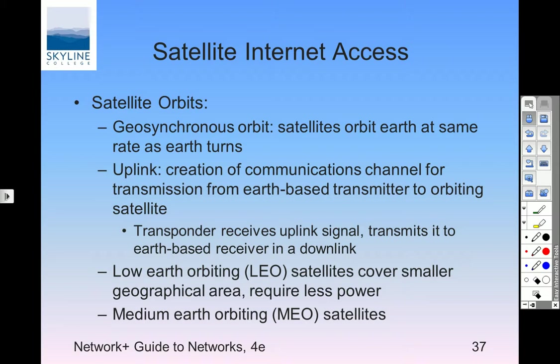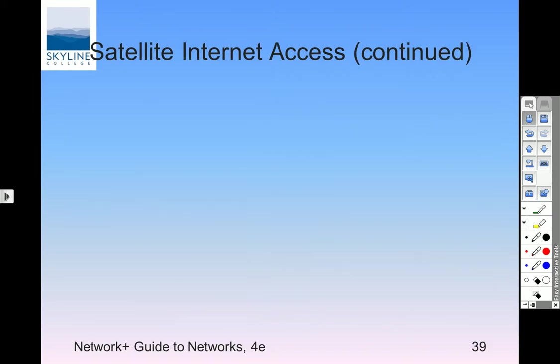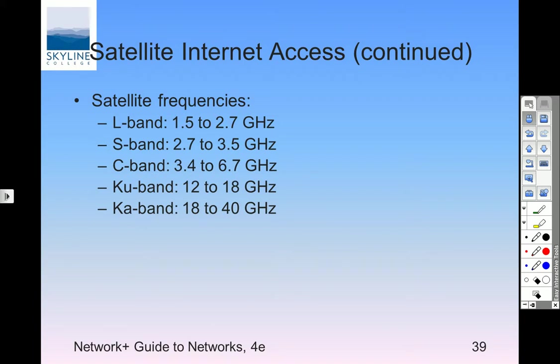Satellite: the problem with satellite is delay. Most satellites now are two-way — originally it was telephone request up and satellite download, but now it's two-way. The problem is significant delay because even in low orbit the satellites are still about 30,000 miles away in geosynchronous orbit. Satellite frequencies are in the book but I've never seen them on a network+ certification exam.